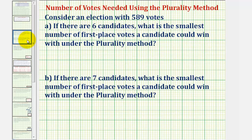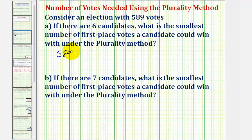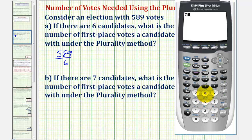Going back to our example, we want to consider an election with five hundred eighty-nine votes. If there are six candidates, what is the smallest number of first place votes a candidate could win with under the plurality method? To answer this question, let's begin by assuming a six-way tie. If there was a six-way tie, the number of votes each candidate would receive would be five hundred eighty-nine divided by six. Five hundred eighty-nine divided by six is not a whole number — it's approximately ninety-eight point one seven.